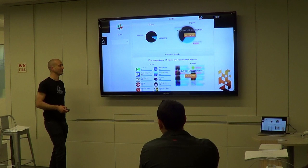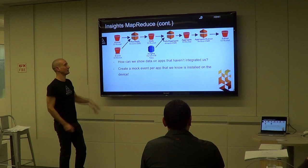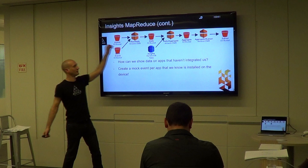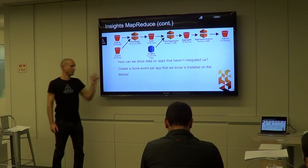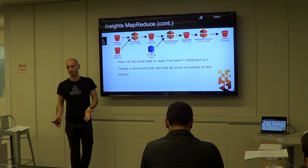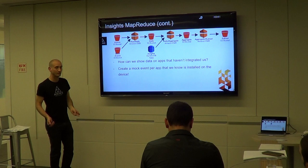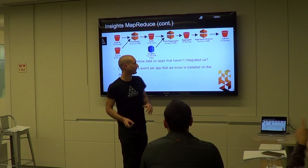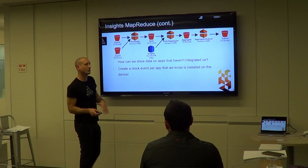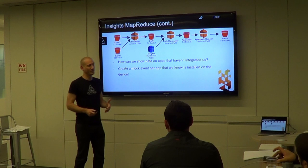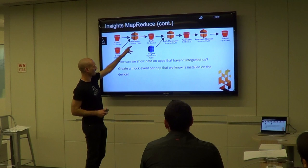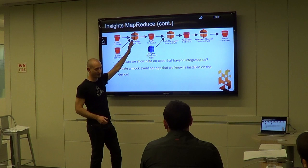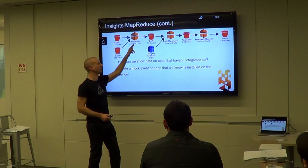We've decided we also want to show data for applications we're not integrated into. The reason for multiple sequential MapReduces is decoupling - each daily MapReduce result is reused by the next aggregation. The 30-day MapReduce reuses 29 days of previously generated daily results. Since we run it only once a day, the latency is acceptable, and we get great decoupling and data reuse.